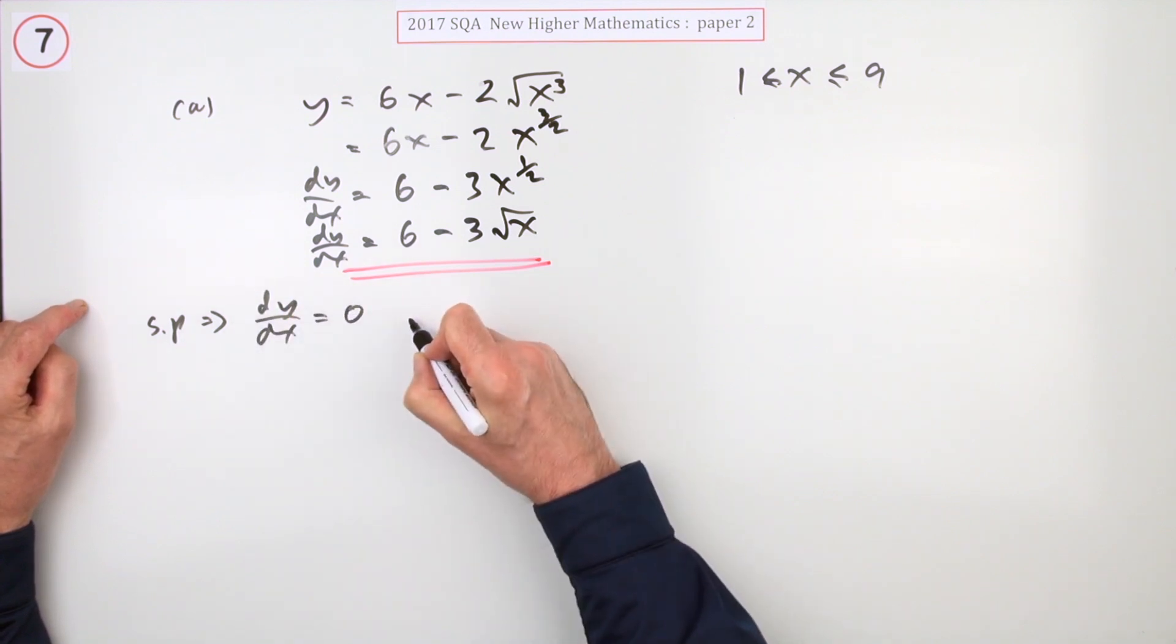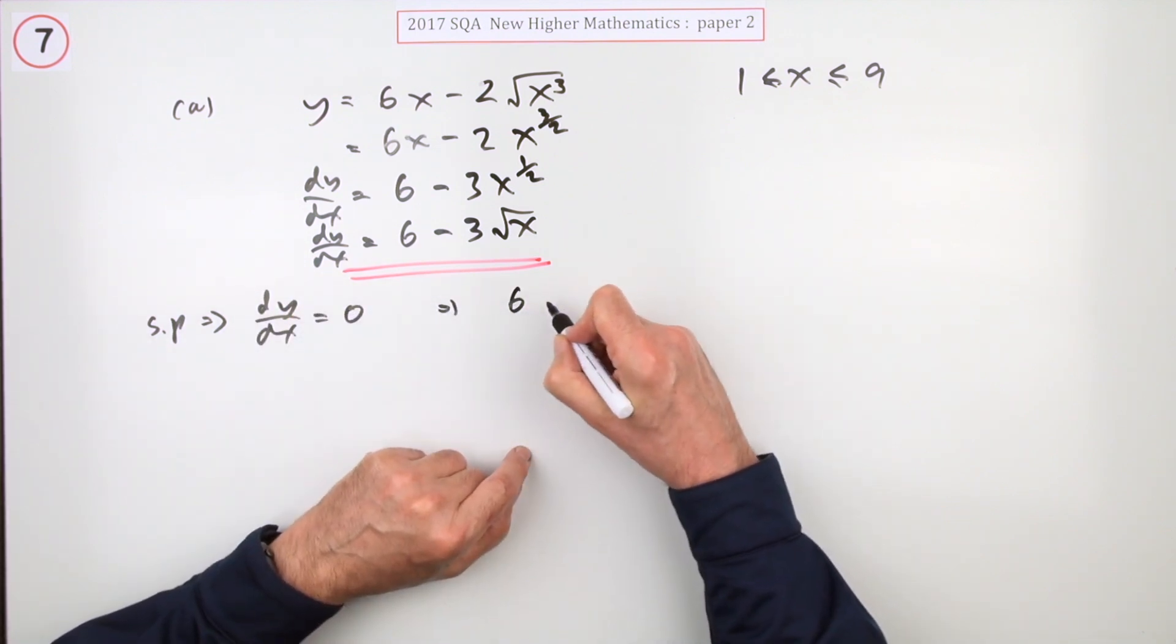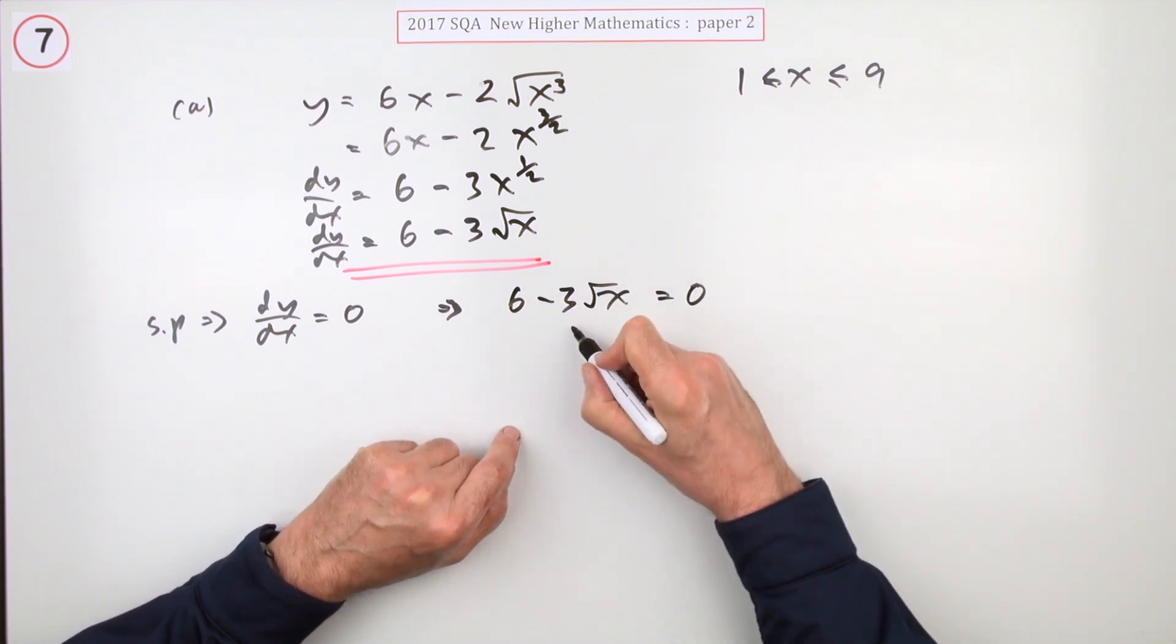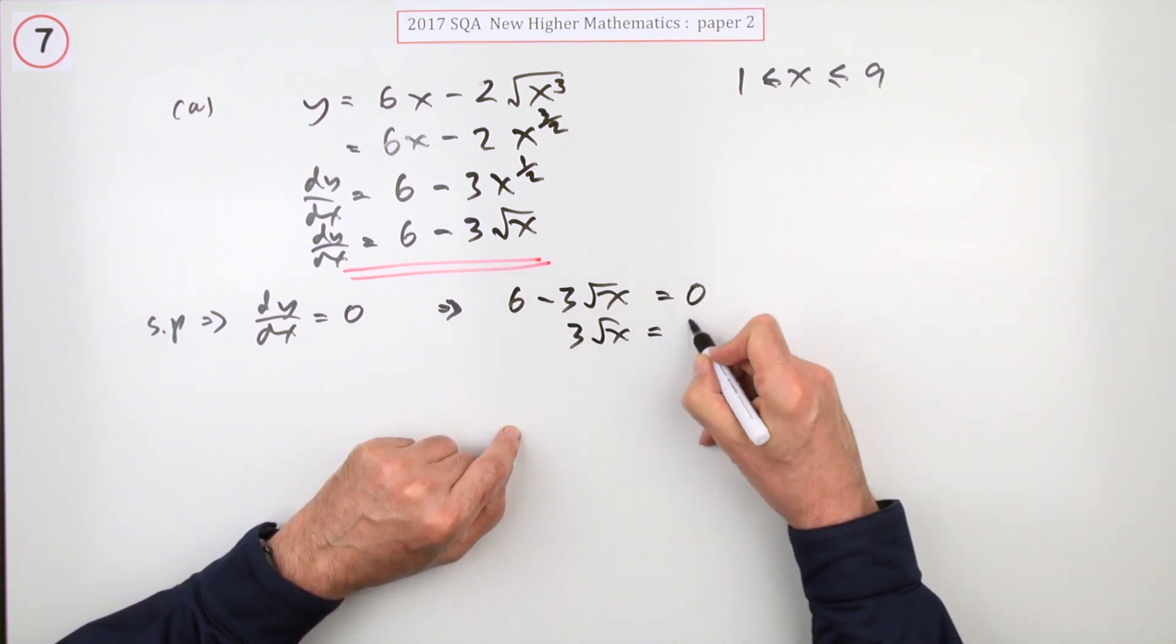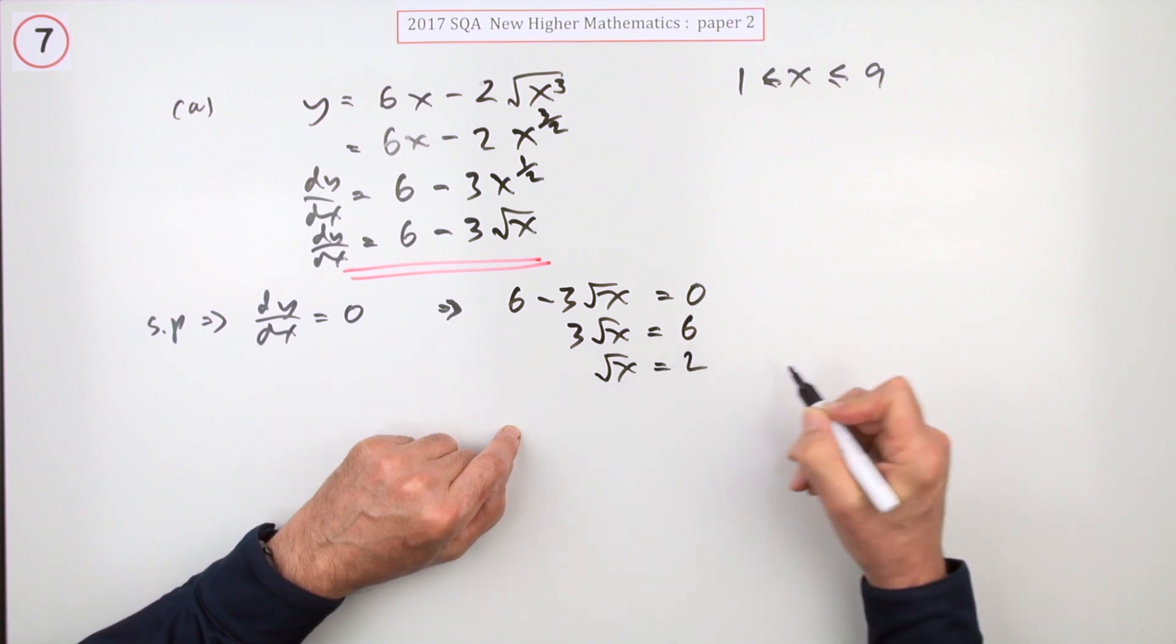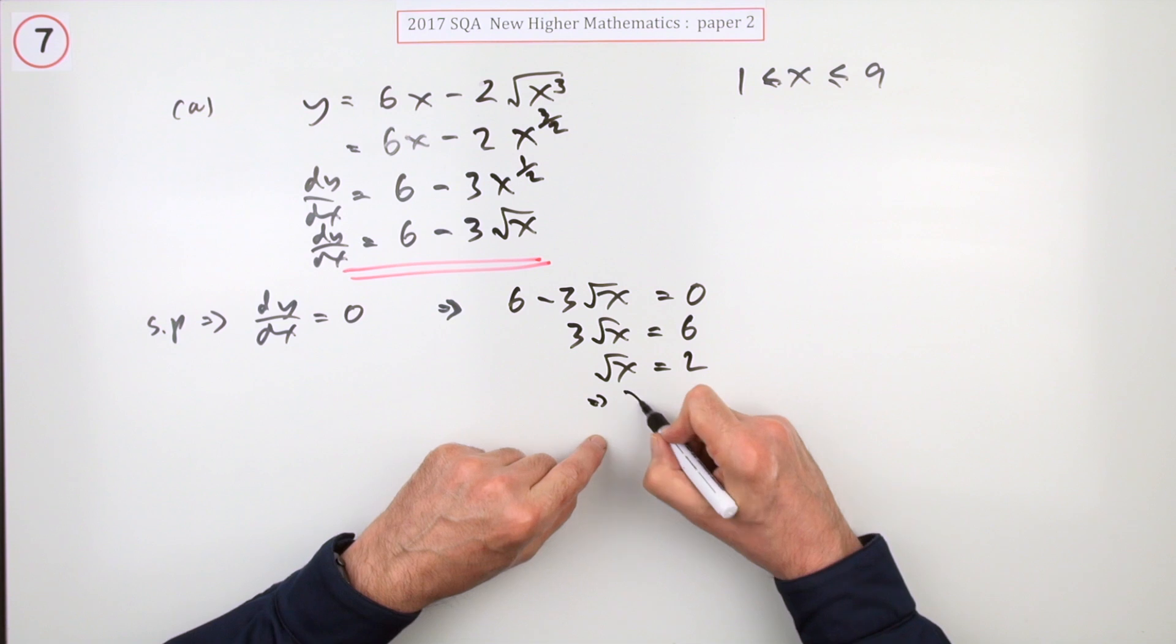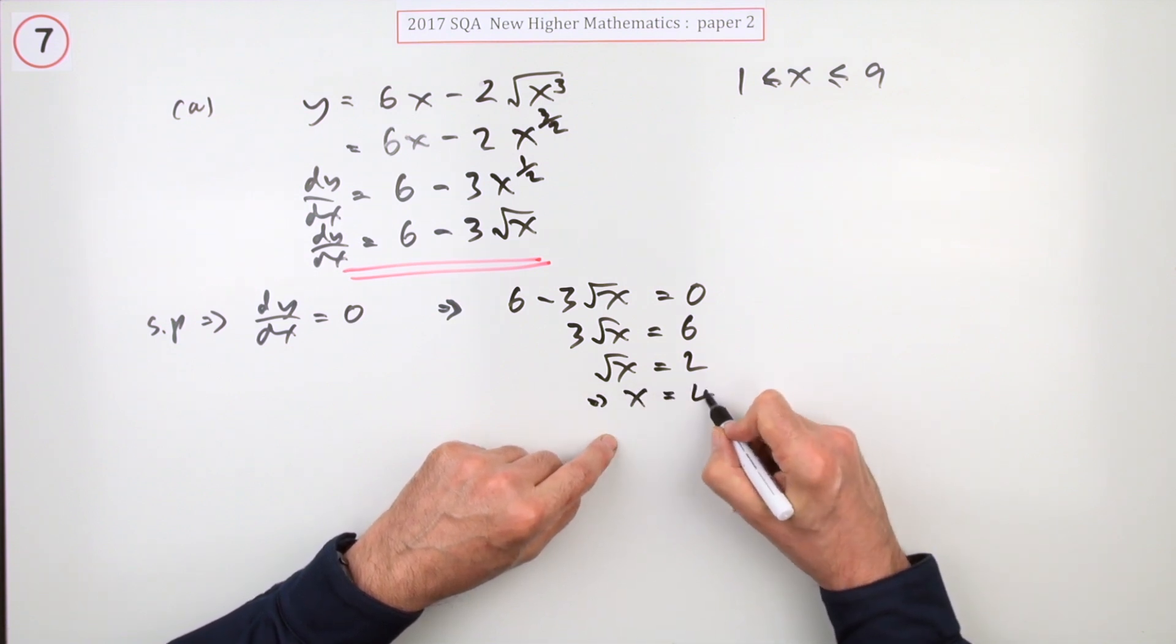Now it said stationary points, well they occur when dy/dx is equal to zero, in which case 6 minus 3√x should equal zero. So 3√x should equal 6, so √x should equal 2, which means squaring both sides you're only going to get one answer, which means x equals 4.